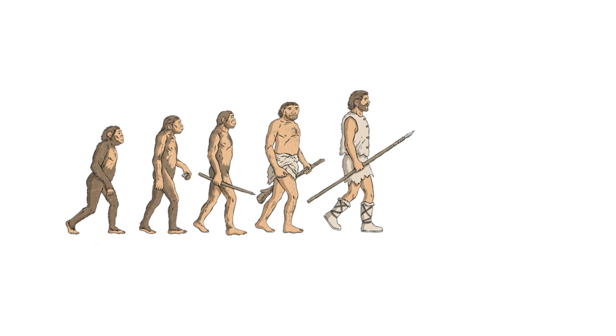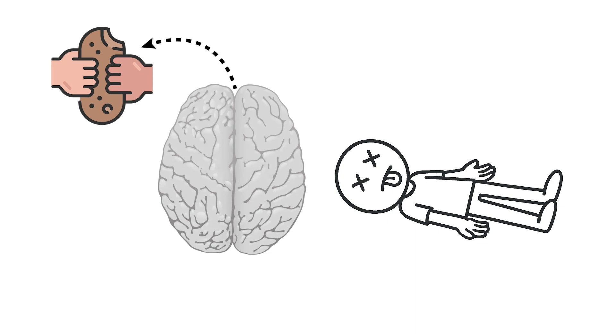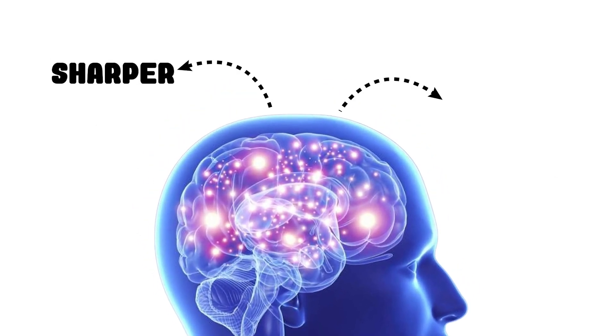From an evolutionary standpoint, this makes sense. A brain that got dull during food scarcity would have been a death sentence. Instead, the human brain evolved to get sharper and more capable of finding the next meal.